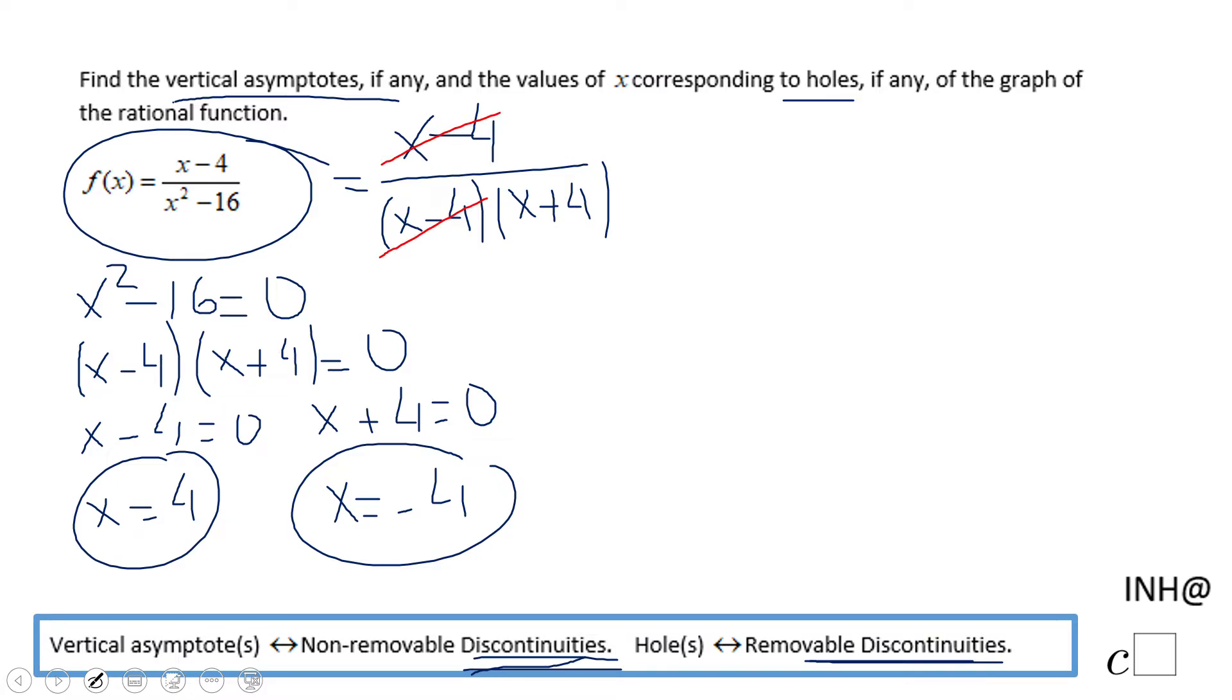x minus 4 is disappearing now, we remove it. So the simplest form of our rational function is 1 over x plus 4.